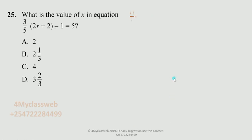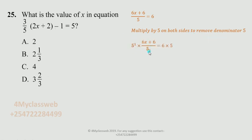I have a denominator of 5 that I need to remove, so I multiply both sides by 5. Multiplying 6x plus 6 over 5 by 5 on the left side and 6 by 5 on the right side eliminates the denominator — dividing 5 by 5 gives 1 — leaving 6x plus 6 on the left side equal to 30 on the right side.